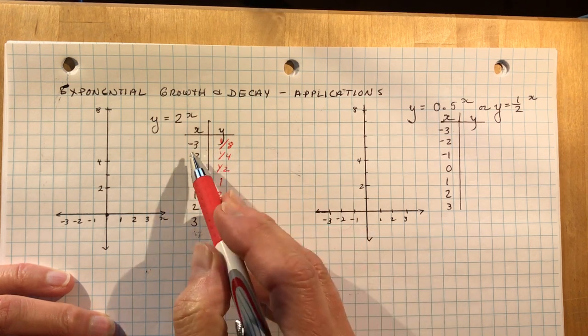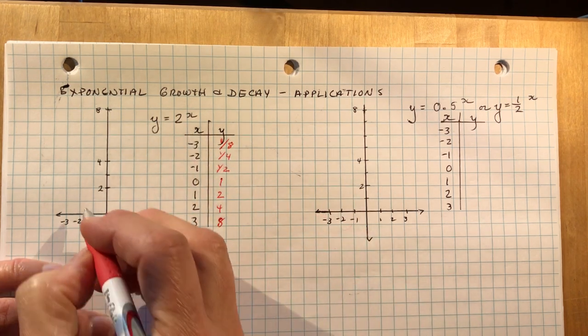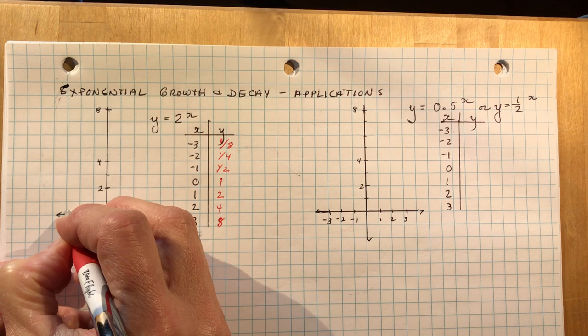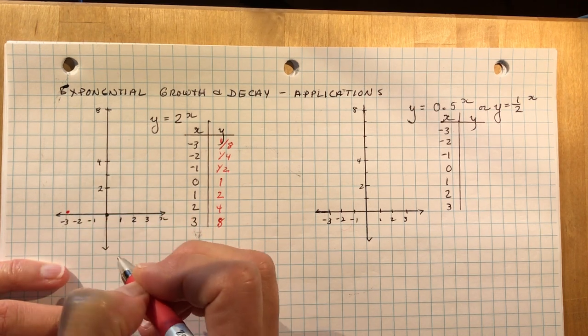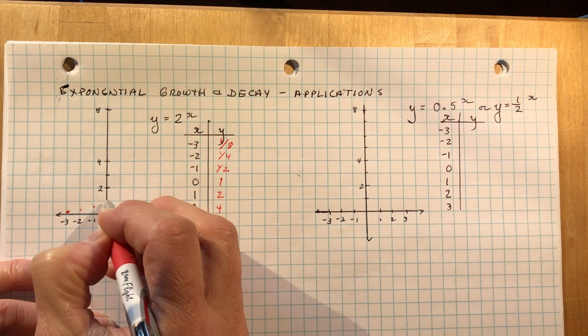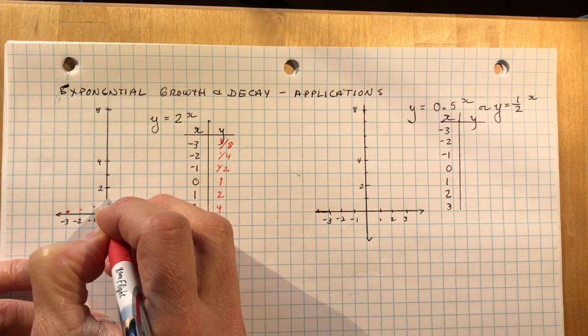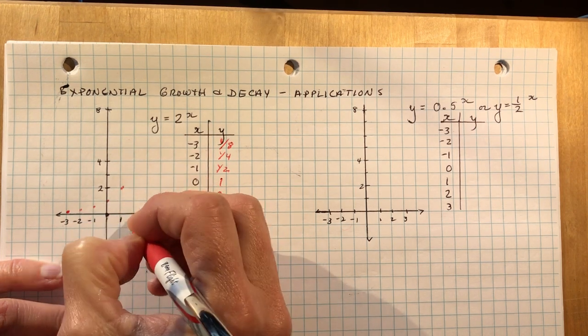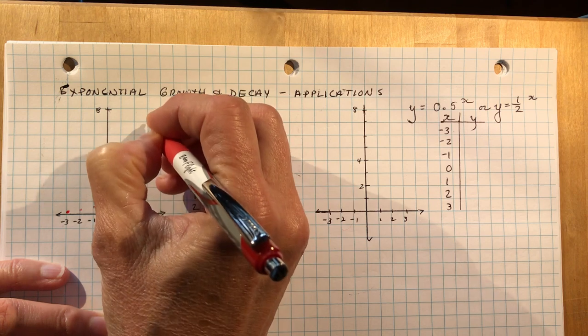So there's my coordinates if I wanted to graph 2 to the x. It's not going to be extremely accurate because it's hard to graph a quarter, an eighth, a half. 0, 1 is 2, 2 is 4, 3 is 8.